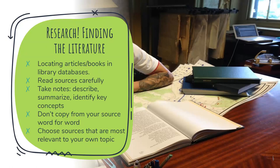Read your sources carefully enough that you understand their main arguments and how they are relevant to your study. As you're doing this initial step and making notes, try to describe, summarize, and identify the key concepts and theories. Don't copy from your source word for word. Even as you take notes, put it in your own words what the authors are saying about a specific topic. This will help you later on as you're synthesizing the information. Choose only sources that are most relevant to your own topic. You don't want to get bogged down by trying to bring in too much information.